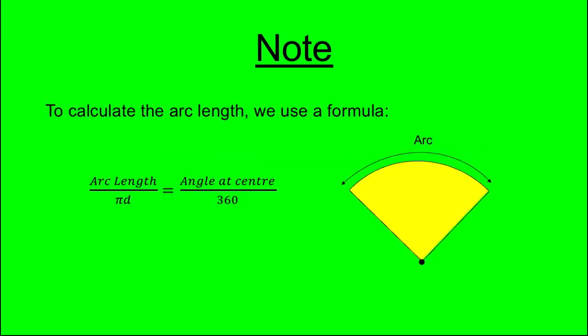To calculate arc length, we use a formula. Arc length divided by pi d is equal to angle at the centre divided by 360.